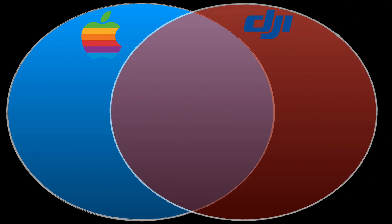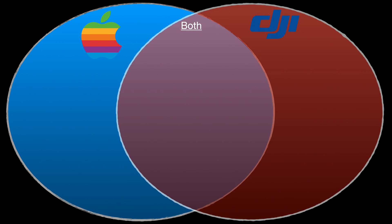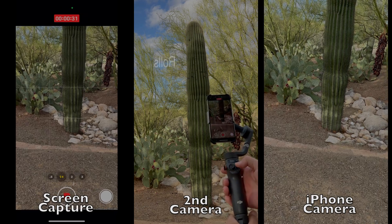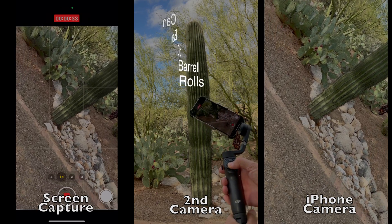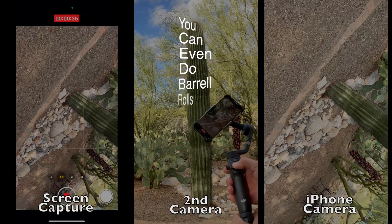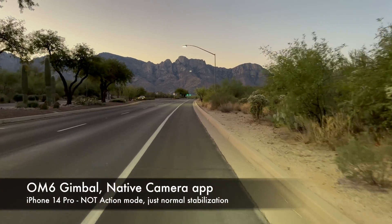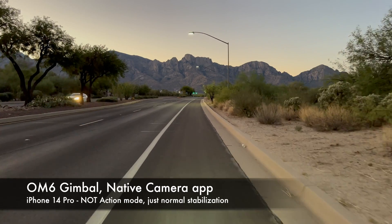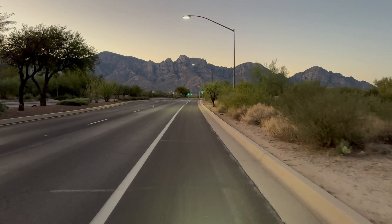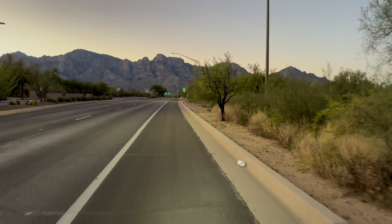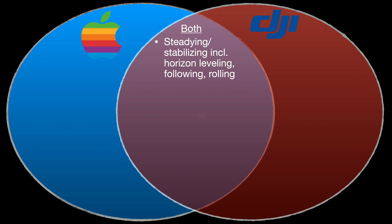Let me start by clearing up a potential misunderstanding. All of the fundamental abilities of the gimbal work just fine with the Apple Camera app. Axis stabilization and all five follow modes work just fine without using Meemo. So if you want to film scenery while riding your bicycle and get nice steady footage, just use the native app and have at it.